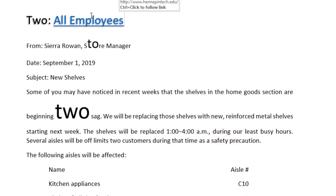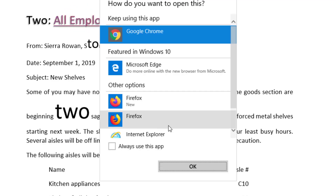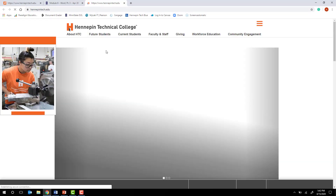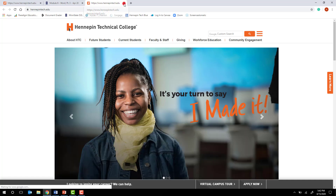A hyperlink starts as blue and underlined — that indicates it's an active hyperlink that hasn't been used. When you point to it, a screen tip shows the web address and tells you that to activate it you need to hold Control and click — Control+click on that blue underlined text and it launches the website or takes you to that location. For example, selecting 'all employees,' going to Insert > Links > Hyperlink, entering www.hennepintech.edu, and clicking OK creates the hyperlink. Control+clicking then opens the Hennepin Tech website.